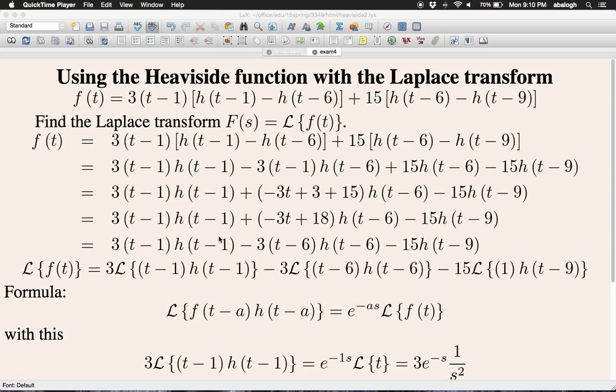After simplification, now we have the three Heaviside functions: h of t minus 1, h of t minus 6, and h of t minus 9, with some multipliers in front of them. Now we start applying the Laplace transform for this function.